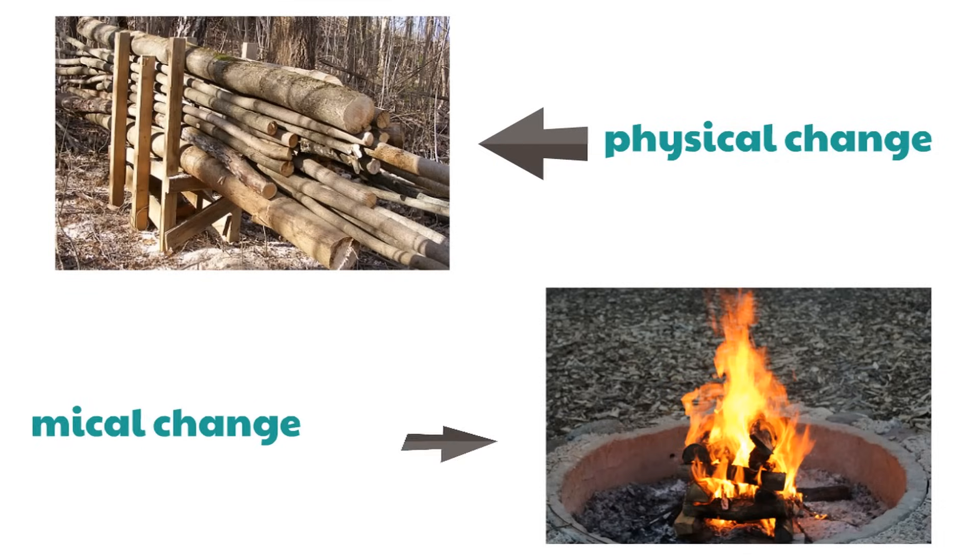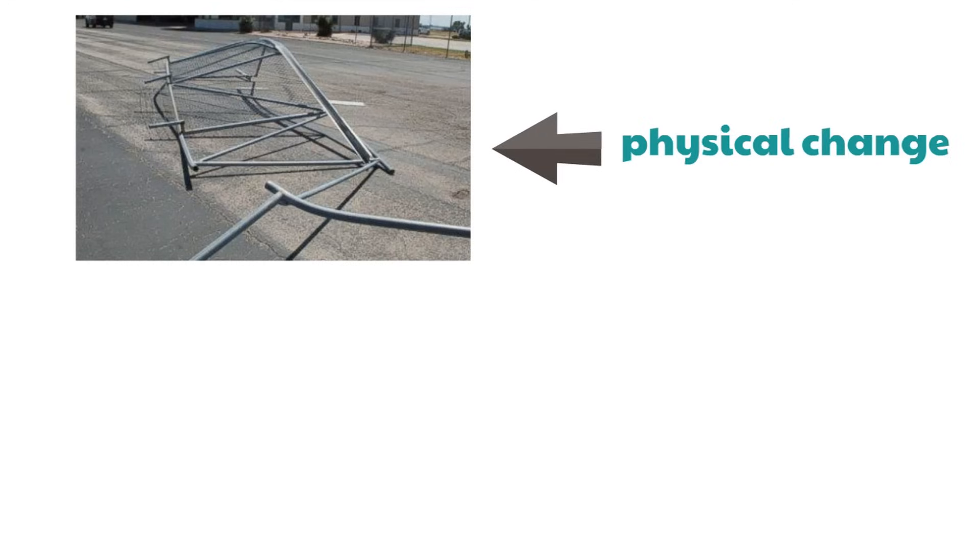Here we have a picture of a metal gate that has been knocked down and bent — maybe it got run into by something really large. This gate has been broken. Is that a physical or a chemical change? With physical change, the type of matter doesn't change, but with a chemical change it does. This is a physical change — it's knocked down, but it hasn't changed the type of matter.